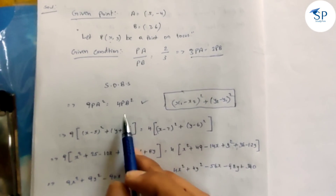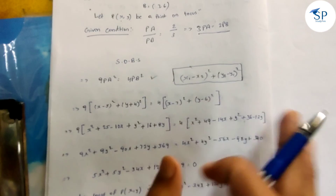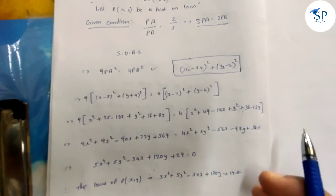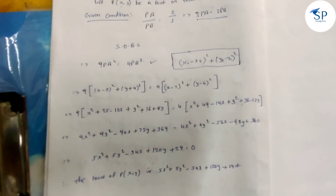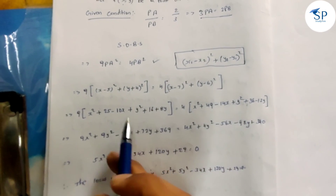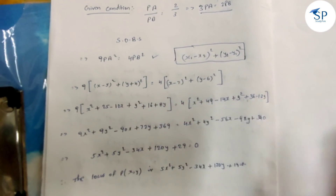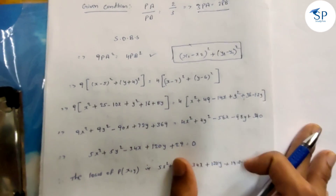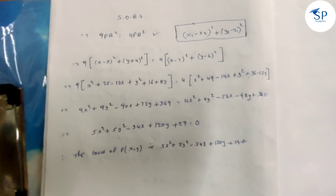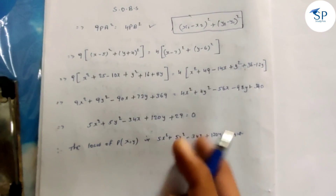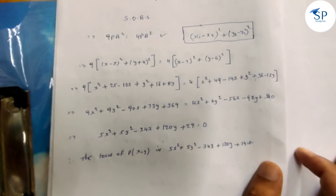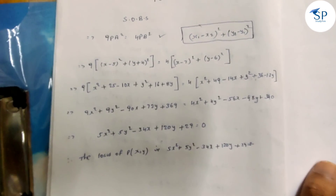To summarize: 9PA² = 4PB². We apply the distance formula (x1 - x2)² + (y1 - y2)², substitute the given points, multiply through by 9 and 4, and cancel terms to get the equation of the locus.